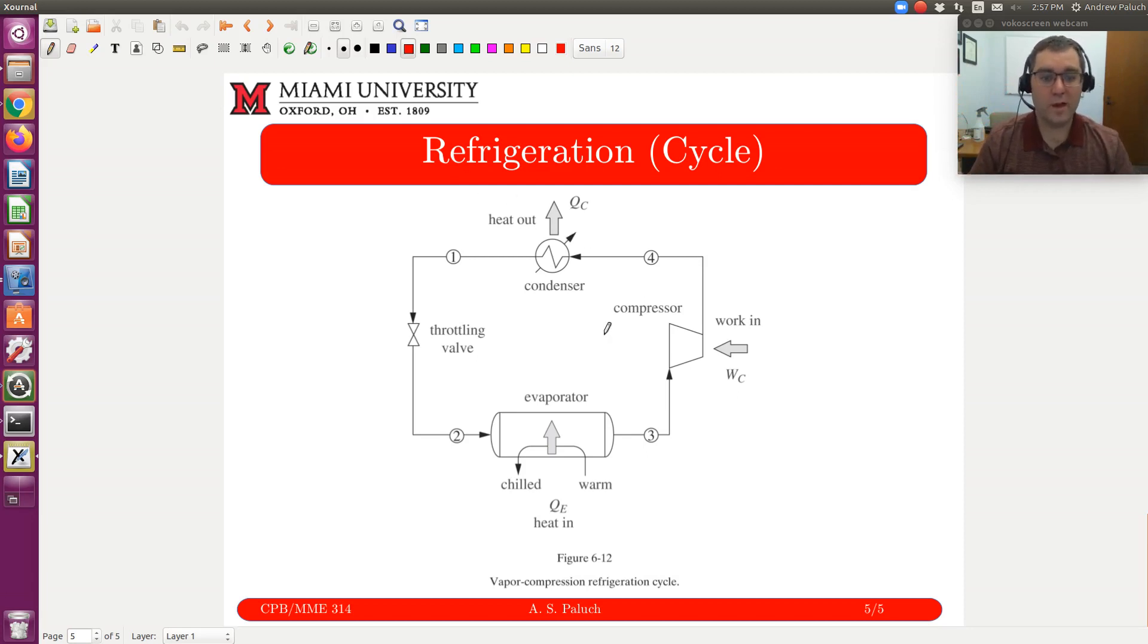In a refrigeration process, my goal is to remove heat from my colder body, reject that heat to a hotter body. In order to move heat from a low temperature body to a hot temperature body, which is outside, I need to put work in. Work is going to come in here in my compressor. We'll go through the analysis of our power generation and refrigeration cycle.